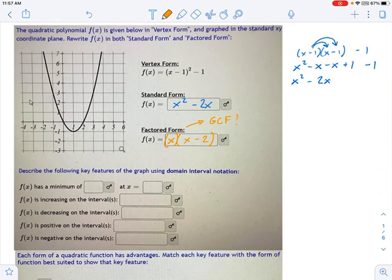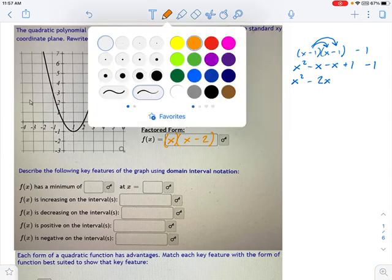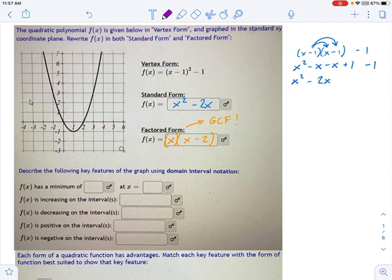The key features is asking you basically just to look at the graph and describe it. So where's the minimum? Well, you know what a minimum is. That's the lowest point. And it reaches a minimum of y equals negative 1 at x equals positive 1. It's increasing all over here. This is all increasing, the right side of that minimum.